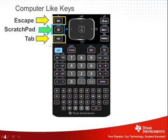And then here's Tab. Similar to a computer, when you want to navigate and jump from field to field — for example, if we were to go to the Settings and want to change it from Degrees to Radians, you could press Tab. Shift-Tab will take you back through a field. Notice the color of Control — notice how it's blue. There are a variety of other things that are blue on the screen, for example this blue Off button. If we press Control and On, that will turn it off.